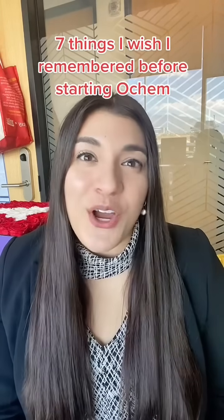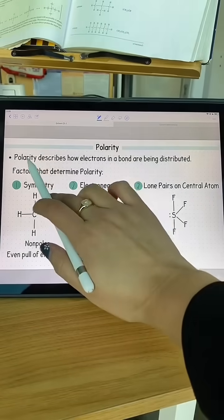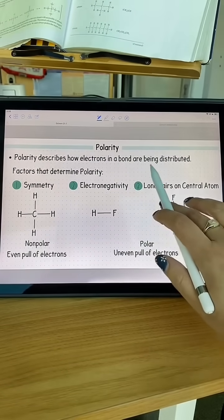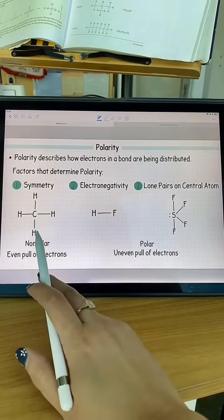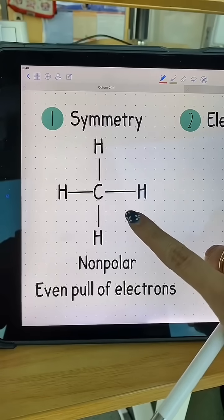Seven things I wish I remembered before starting OChem. Number three: Polarity describes how electrons in a bond are being distributed. There are three different factors to determine polarity. The first one is symmetry. If a structure is symmetrical, it will